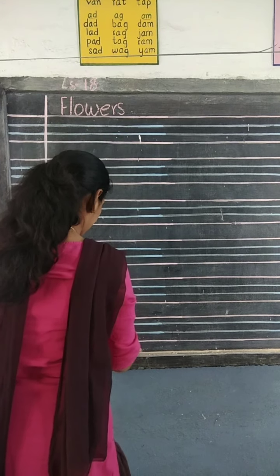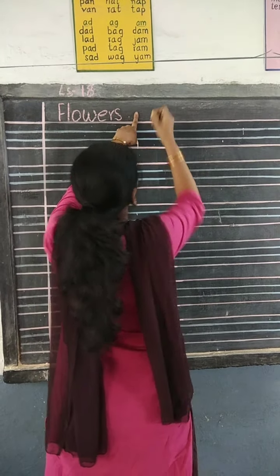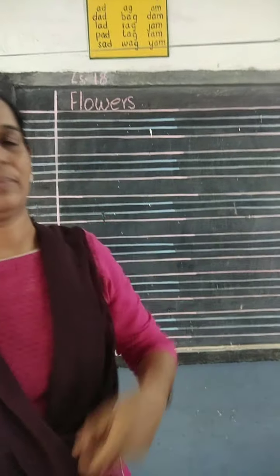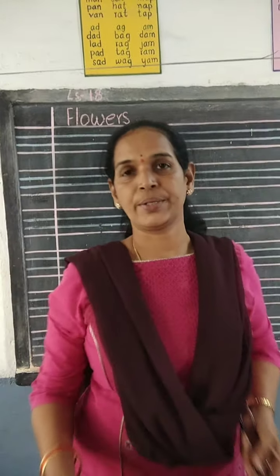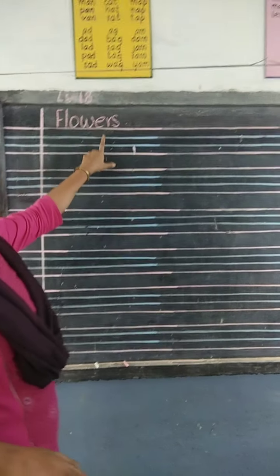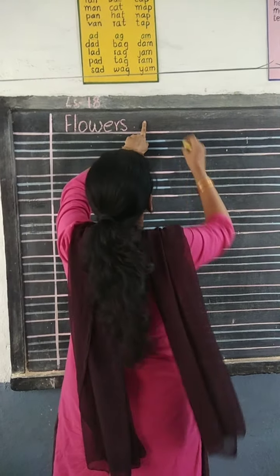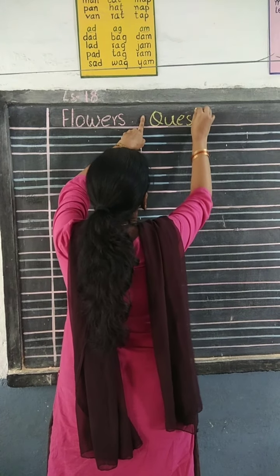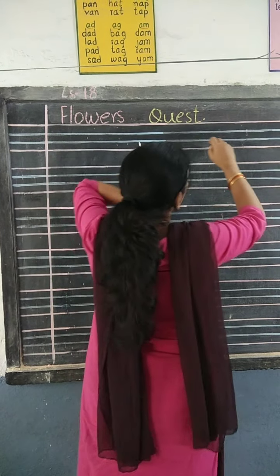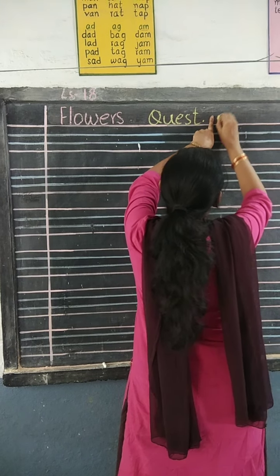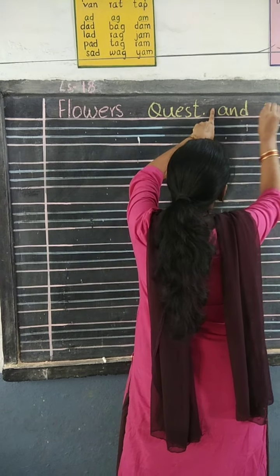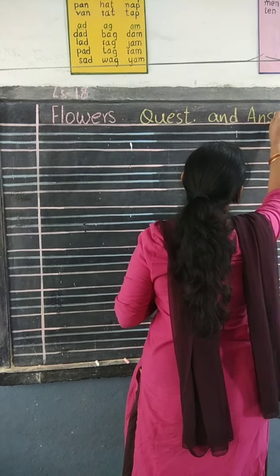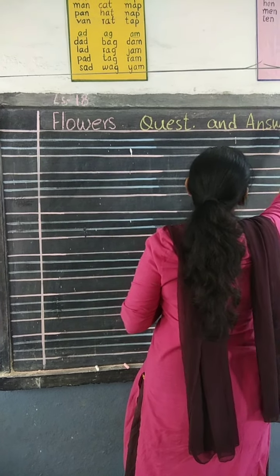Now we will write — fingers face — not hard words. Sorry, question answers. Okay? Question answers we will write. After 'flowers,' fingers face, write Q-U-E-S-T — short formula, because it will not fit in one line. And fingers face, answer: A-N-S, W-E-R. Answer.